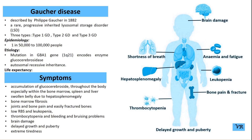The enzyme deficiency leads to the accumulation of glucocerebroside within lysosomes, particularly in macrophages, turning them into Gaucher cells. These cells accumulate in organs like the spleen, liver, and bone marrow, causing the symptoms of the disease.